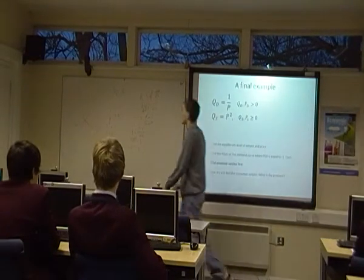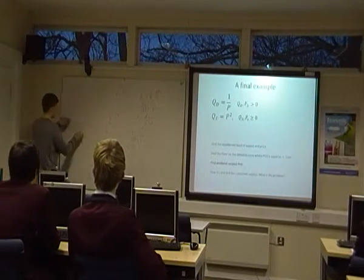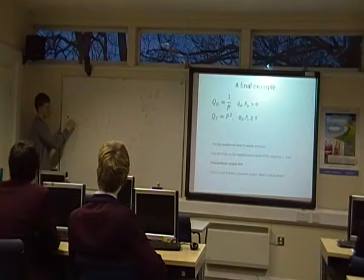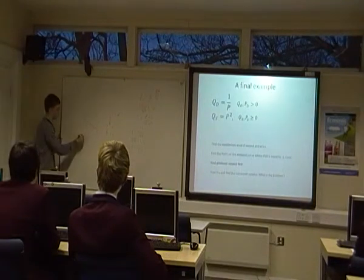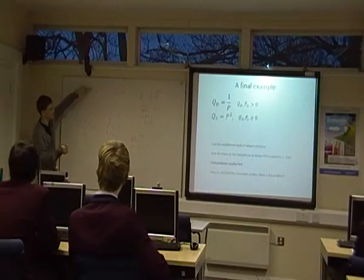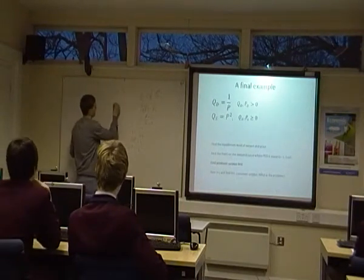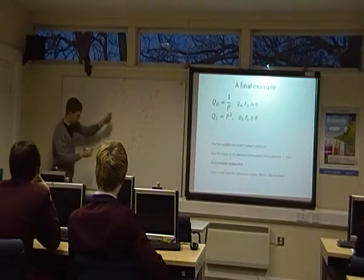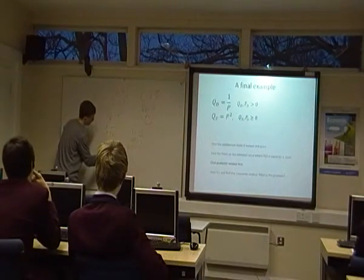And now I'm going to work over here because we'll do producer surplus first. We need to do the area of the box. It's this area. The area of the box is 1, 1 times 1. And we need to minus the integral between 0 and 1 of PdQ. We're looking at supply here. Qs equals P squared.